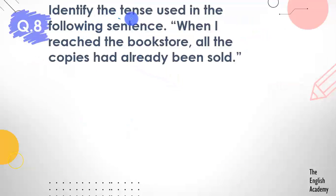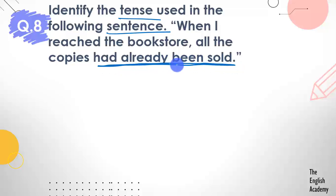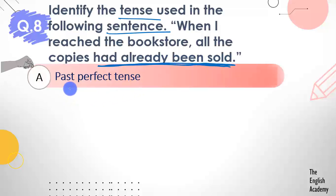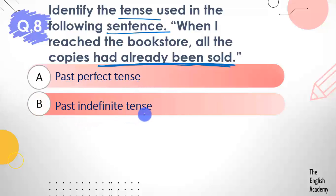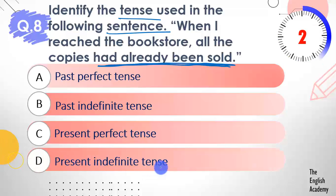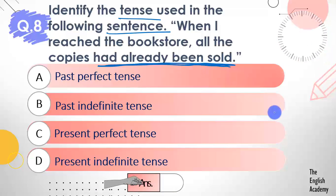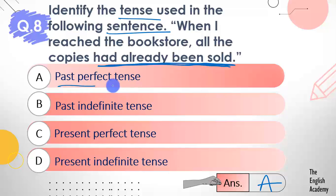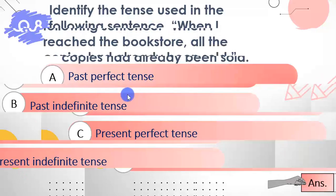Question number 8: Identify the tense used in the following sentence — When I reached the bookstore, all the copies had already been sold. Options: A) past perfect tense, B) past indefinite tense, C) present perfect tense, D) present indefinite tense. The answer is option A — past perfect tense. 'Had already been sold' is past perfect tense, meaning the action was already completed before another past event.